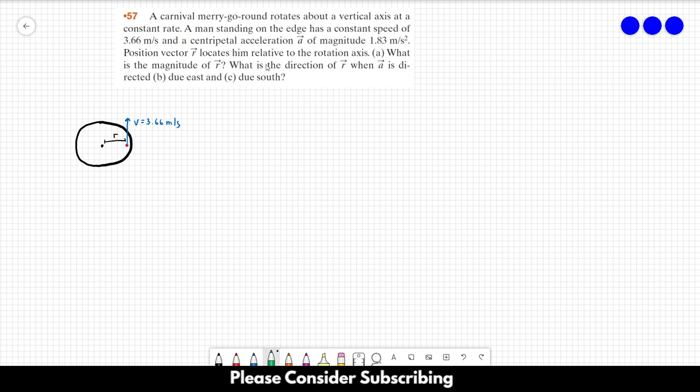And that the acceleration, and of course the centripetal acceleration, points towards the center. The acceleration is equal to 1.83 meters per square second. So those are the information that we have.